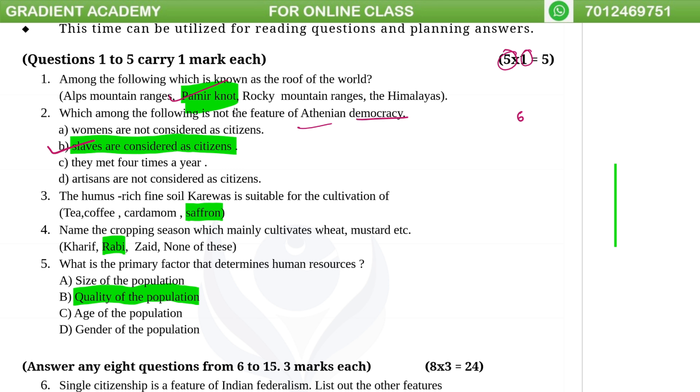Not the feature — if slaves are considered citizens, that would not be a feature of Athenian democracy.